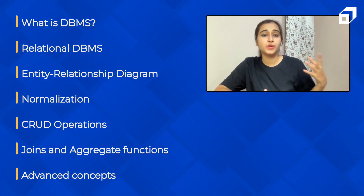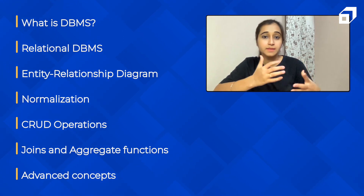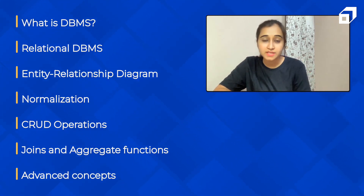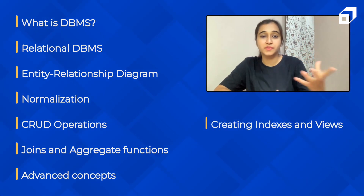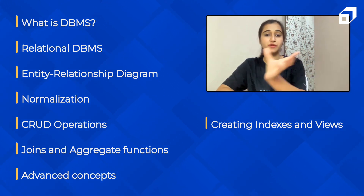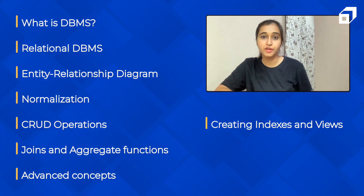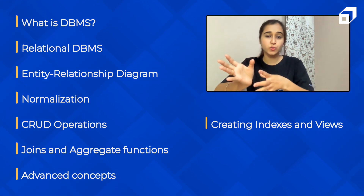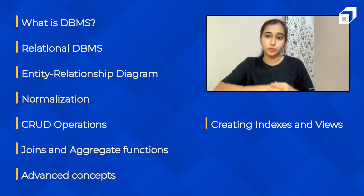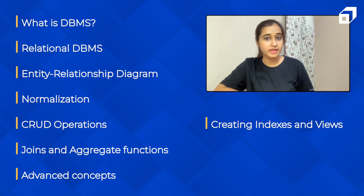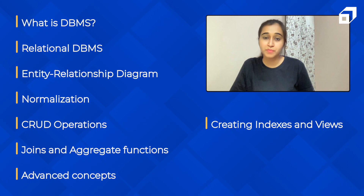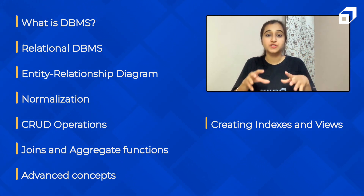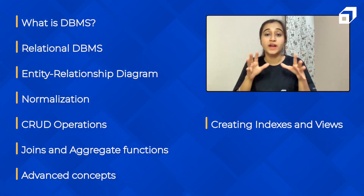Often people say that indexes reduce the time complexity and help to query the database faster. But how are indexes actually created? And how are views actually created? We want different views for different end users. For example, in a college database, we want different views of the data for students, and a different view for instructors, mentors, and teachers. So we will create views and indexes on our tables.